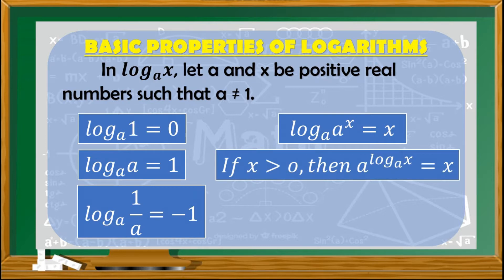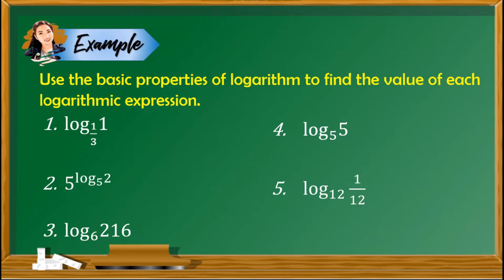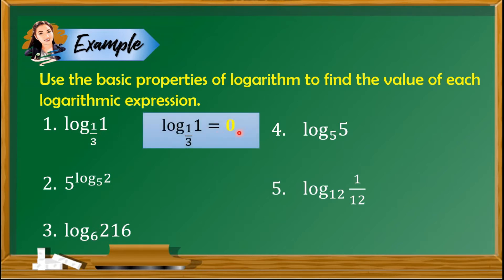Let's apply these properties to our examples. Use the basic properties of logarithm to find the value of each logarithmic expression. Number 1, we have logarithm of 1 with base one-third. As you can see, the x value is 1, and whatever base you have — in this case one-third — the value is always 0.